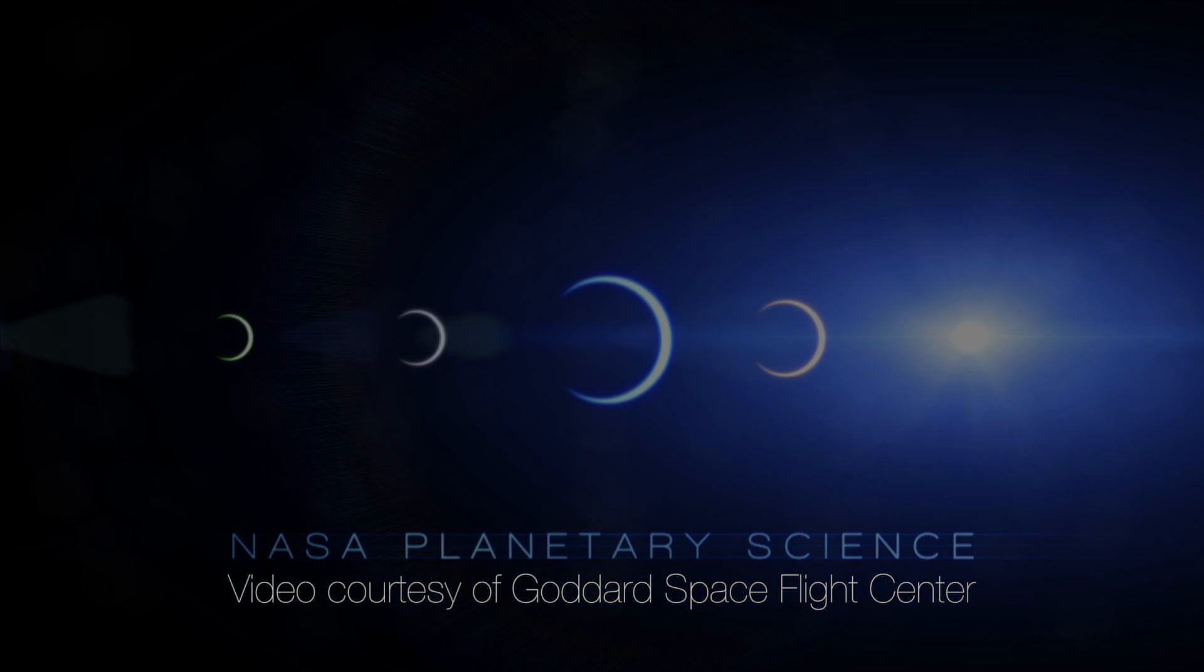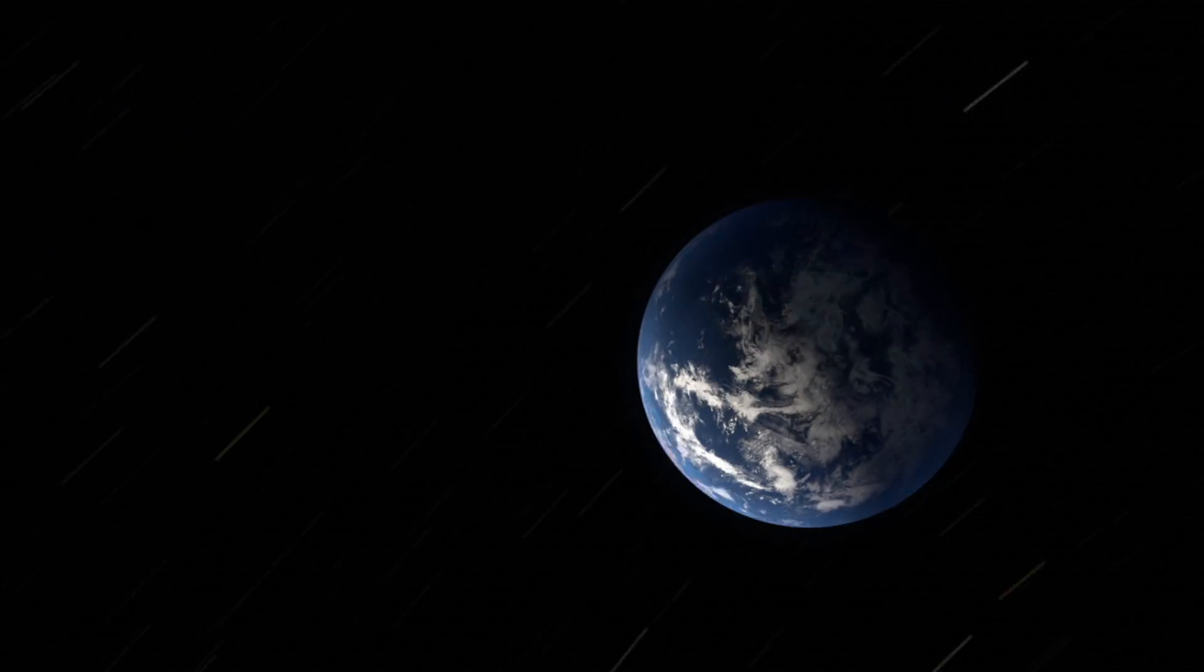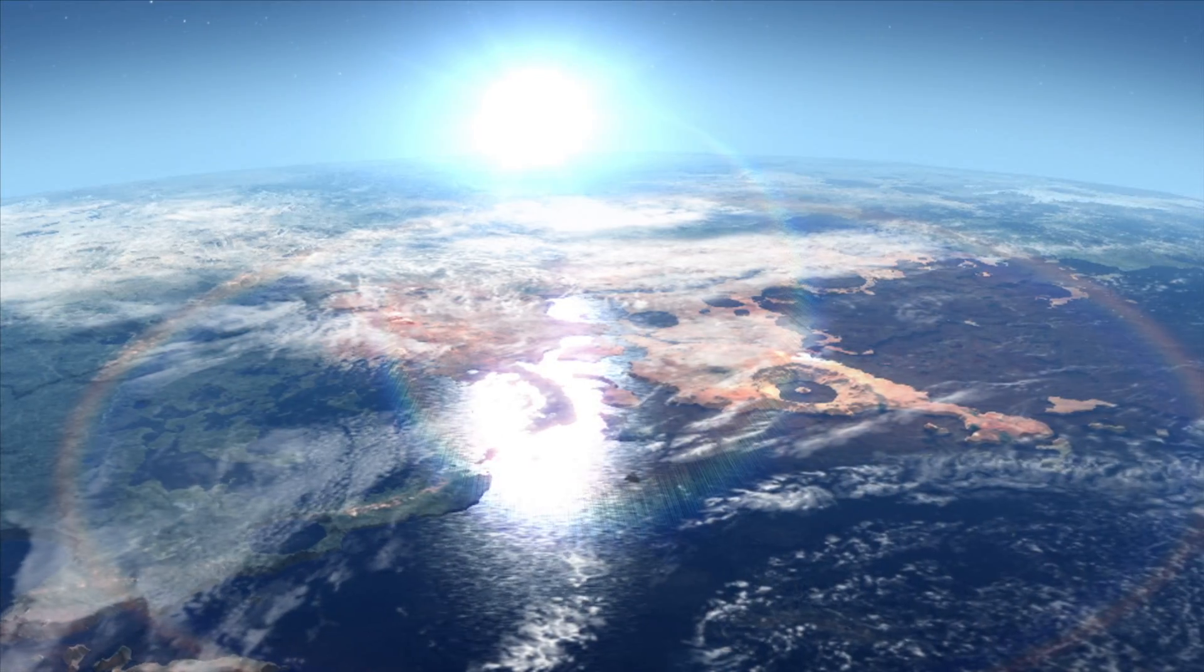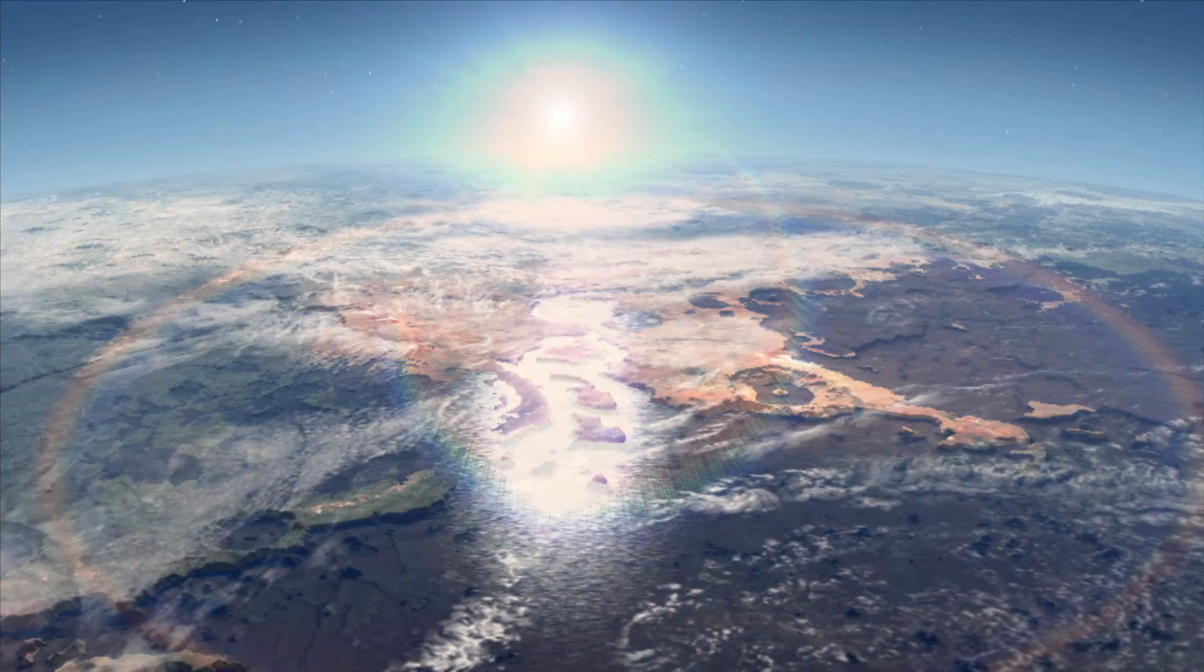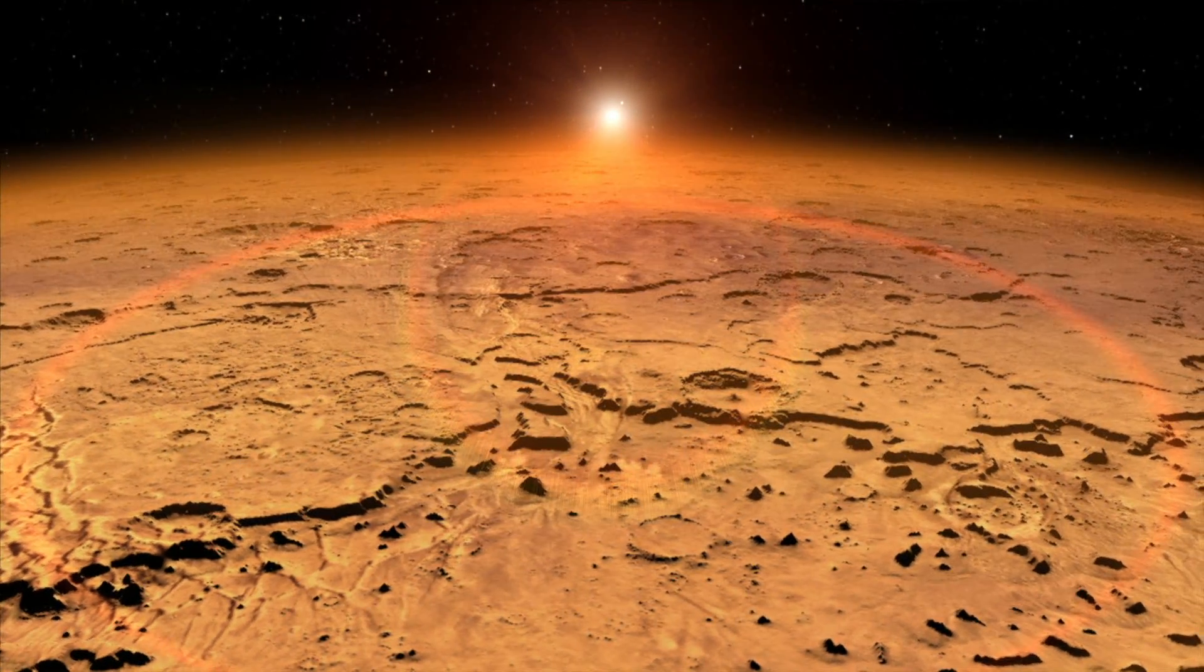So a real outstanding question is, what was the early atmosphere of Mars like, and for how long did it last, and did the conditions on Mars early on that might have been favorable for life persist for hundreds of millions of years, for tens of millions of years, or how long exactly did they persist?